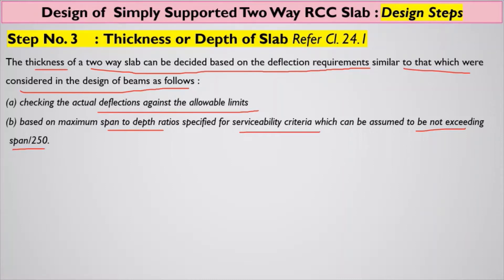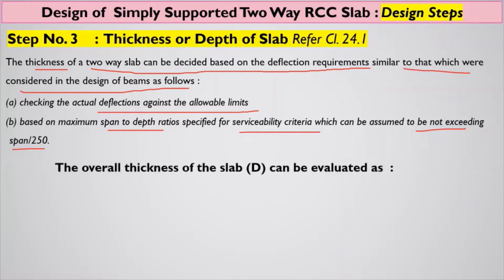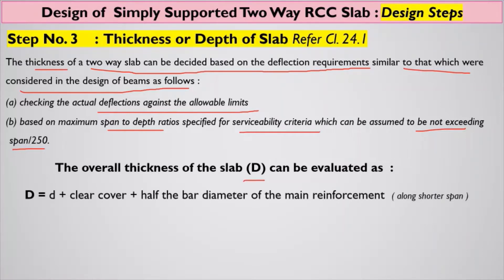Based on these two points, we can first decide a trial thickness of the slab. After doing various calculations and applying various checks, we will understand whether our assumption is correct or not, and accordingly the section can be revised. The overall thickness of the slab (capital D) is evaluated as the sum of effective depth, clear cover, and half of the bar diameter of the main reinforcement.